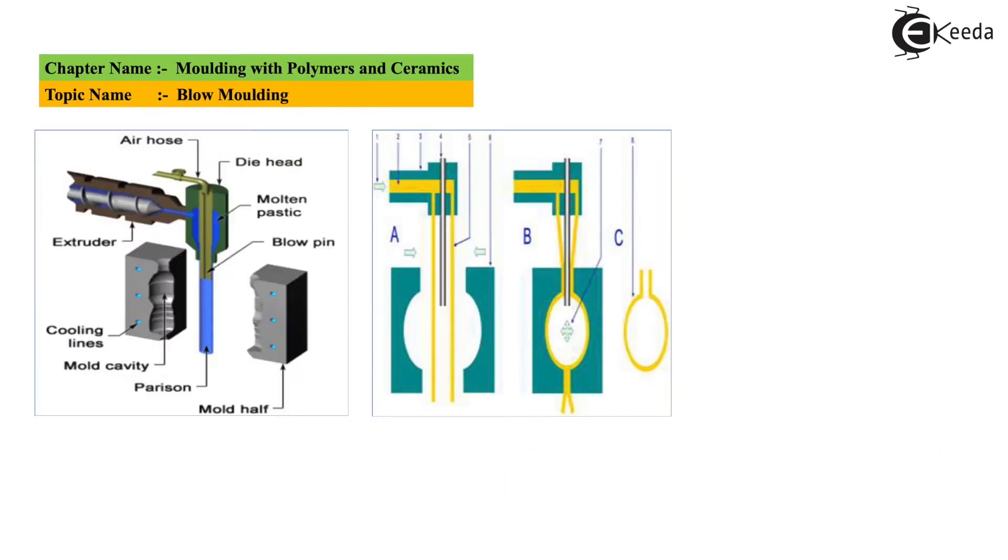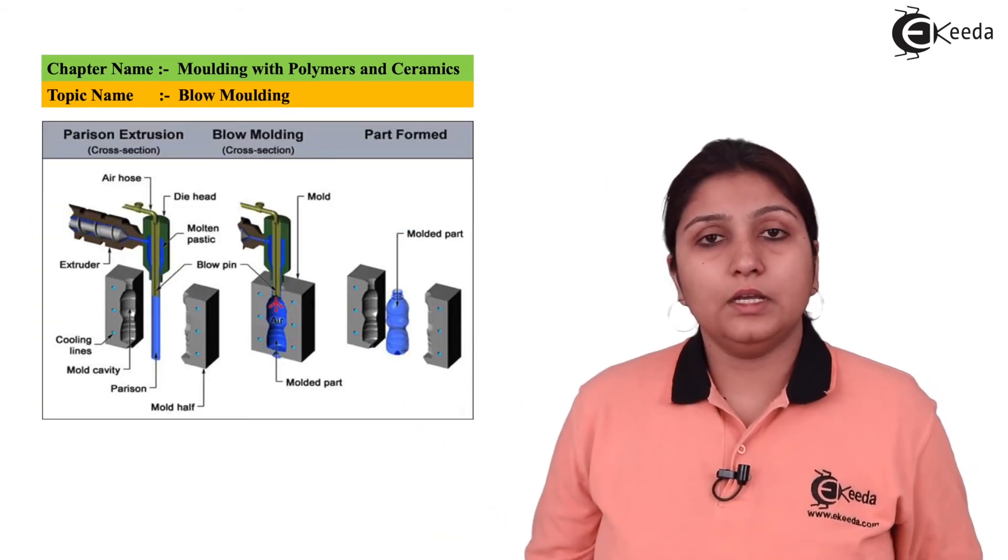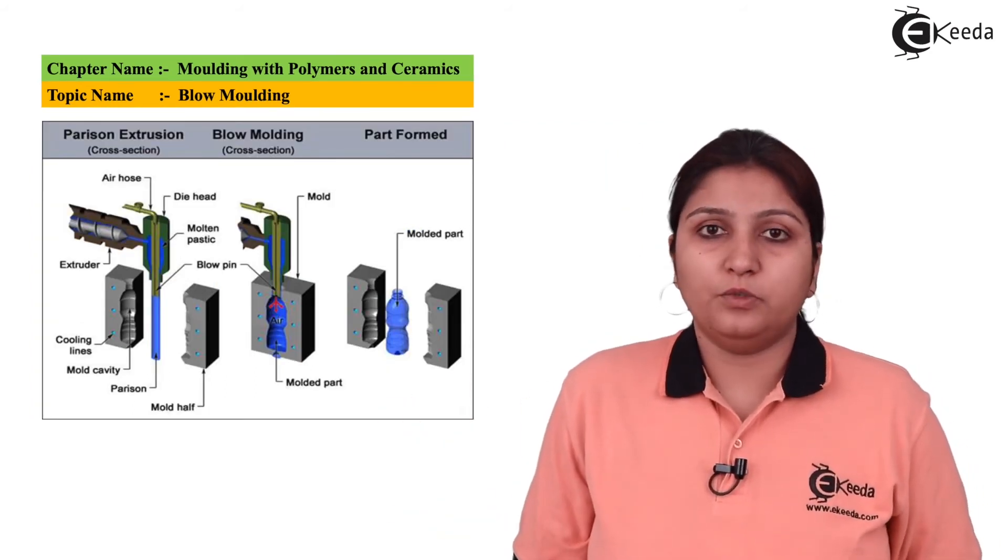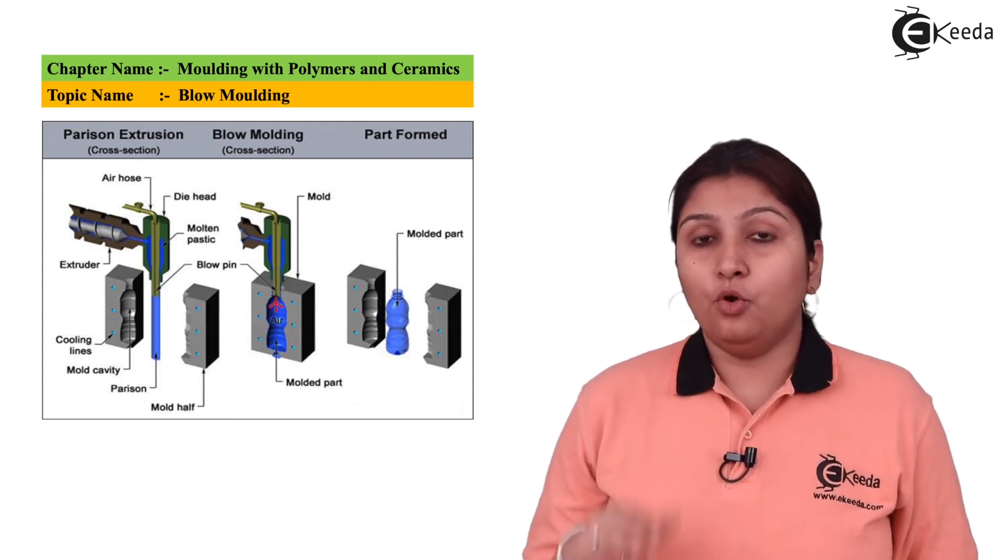In this diagram, you can see A, B, C. There are three steps: one, blowing; second, getting the shape; and the third, when the die is removed, the final shape is obtained. In this diagram, you can clearly see how a bottle-shaped object is formed by blow molding process.